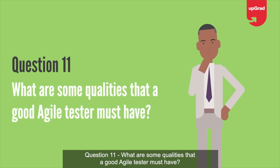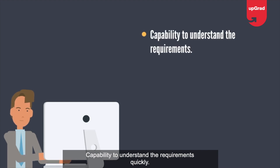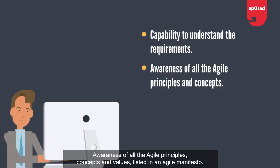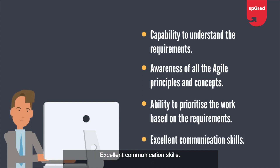Question 11: What are some qualities that a good Agile tester must have? A competent Agile tester must possess the following qualities: capability to understand requirements quickly, awareness of Agile principles, concepts, and values as listed in the Agile manifesto, ability to prioritize work based on requirements, and excellent communication skills.